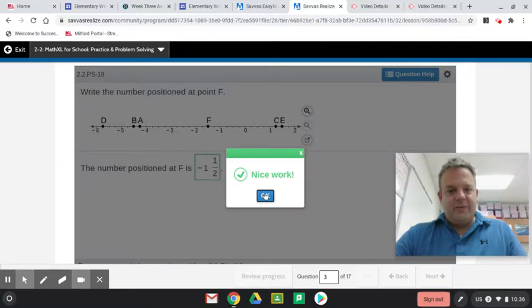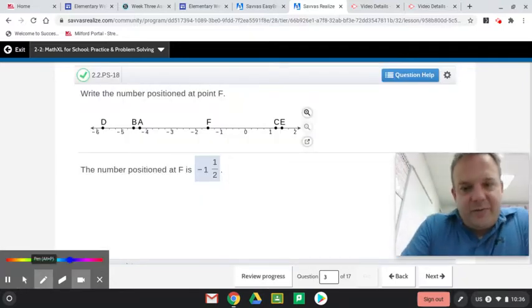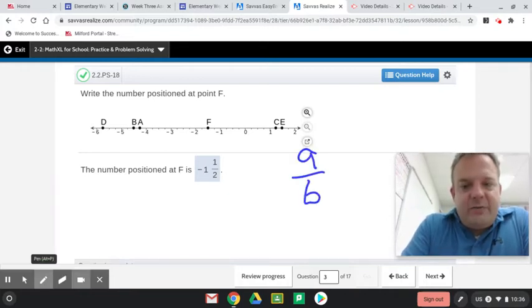Now, what is a rational number? A rational number can be put in the form of A over B, where B is not 0. So what do I mean? Well, this mixed number, 2 times negative 1 is negative. So this would be negative 3 halves here. See how it's put in the form of A over B?